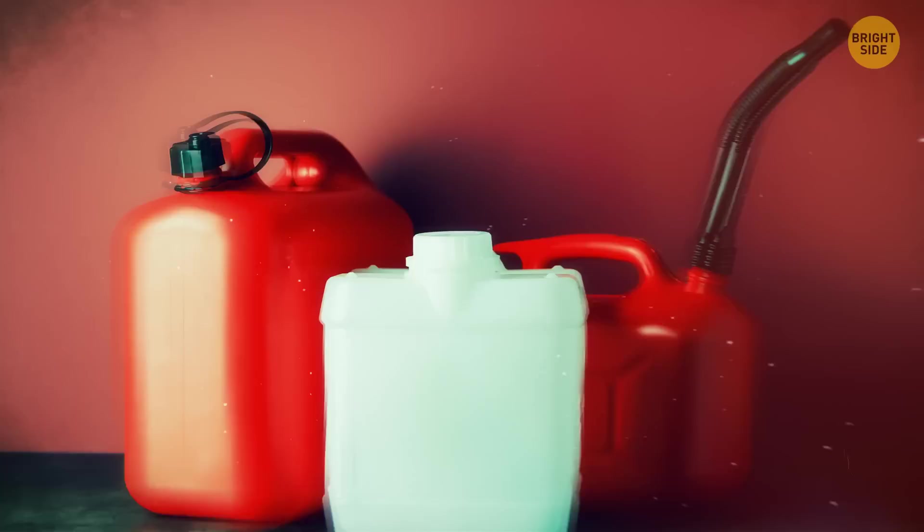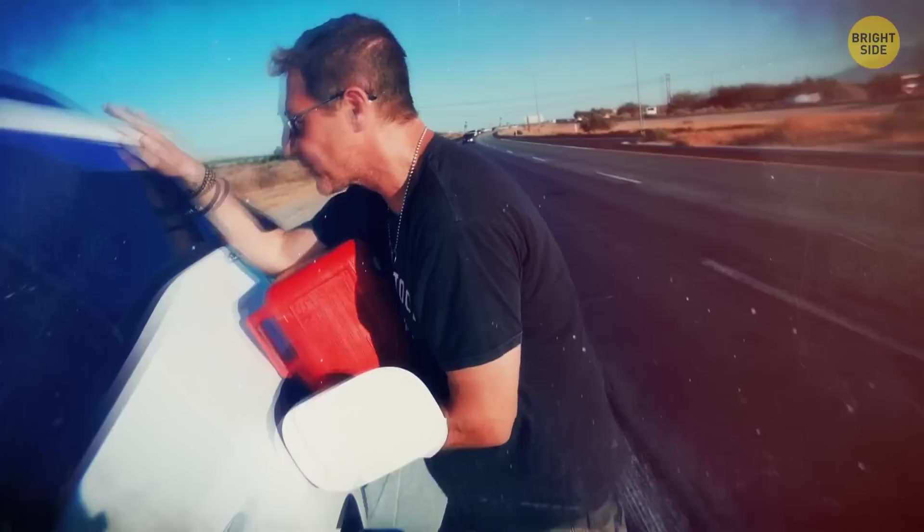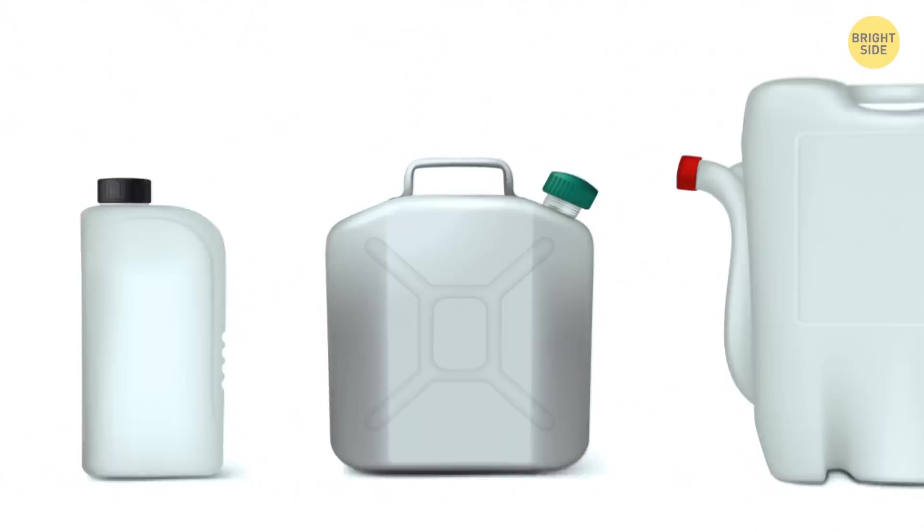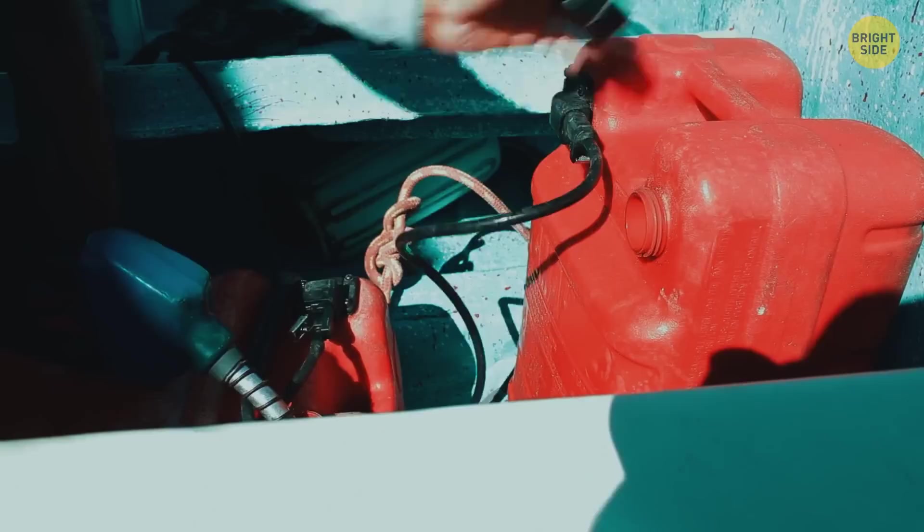Gas cans often have a second hole that actually needs to be uncapped too before you pour the gas. The air passage will prevent it from pouring out, so no more fuel waste. Most gas cans have two holes with caps, a bigger and a smaller one. You're supposed to uncap the smaller hole before pouring gas inside the bigger one. It'll prevent the liquid from glugging and spilling all over your clothes and the ground.